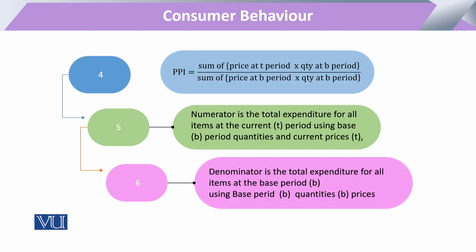As explained with the Paasche index, the consumer is not only utilizing two commodities but a series of commodities. So when there is a basket of goods — the consumer may have 10 or 15 commodities — and he wants to compare over various time periods, in the numerator we take the sum of all commodities at the base period and multiply those quantities by their respective prices at the current time.